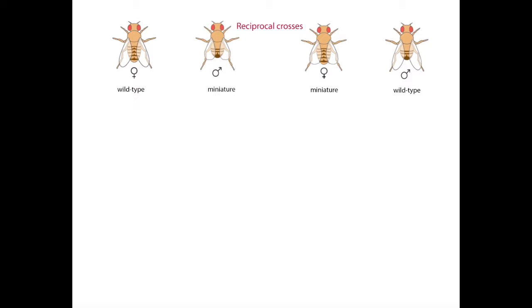What do we see when we mate a male fly with miniature wings to a wild-type female fly? This cross yields flies with only wild-type long wings. We can conclude that miniature is a recessive trait since none of the F1 flies were miniature, but we cannot tell if the trait is X-linked or not.